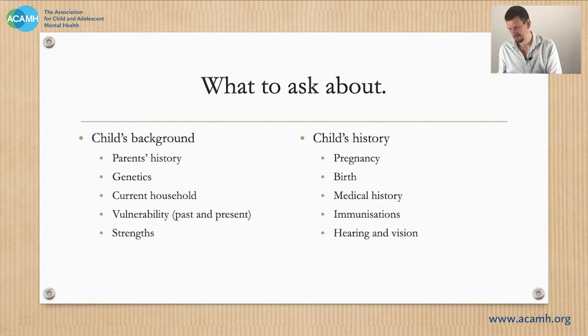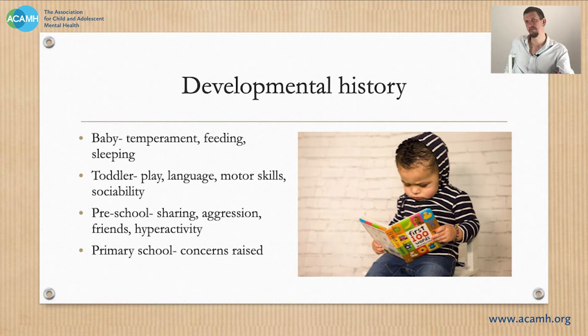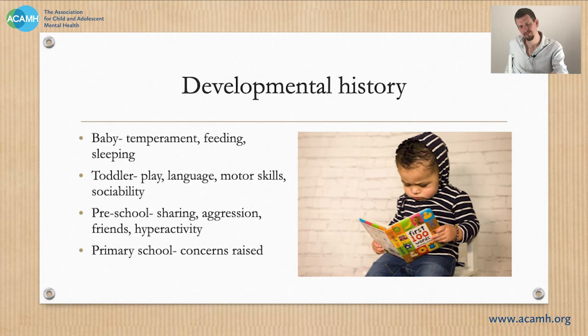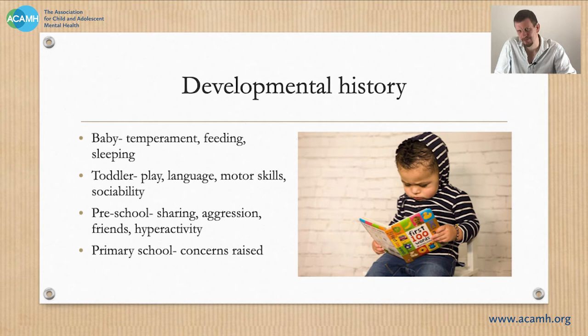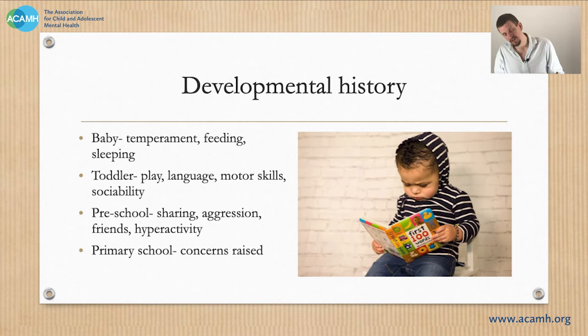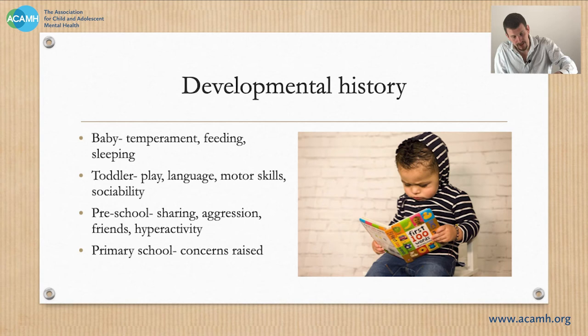Then we take a developmental history. These can be very daunting — oh, what milestones, when did the child do this or that, two words at three or four words at five. None of that really matters, particularly if you're looking at slightly older children. The point is to go through the child and what were they like at different ages, with some idea of what progress they were making, but the main thing is what their personality was like and how they behaved. As babies, what kind of temperament were they — easy or difficult? Difficult temperaments are associated with later neurodevelopmental problems, and that will often be shown by difficulty with feeding and sleeping.